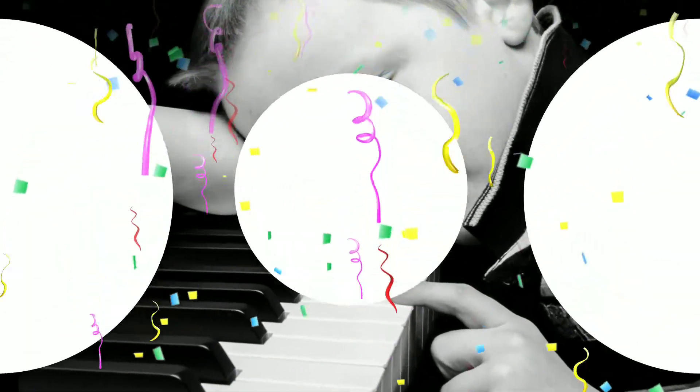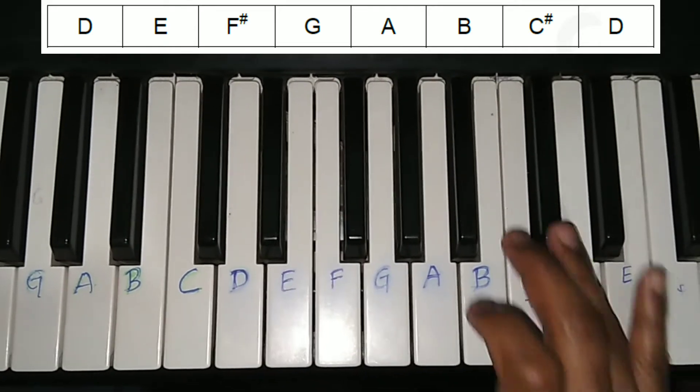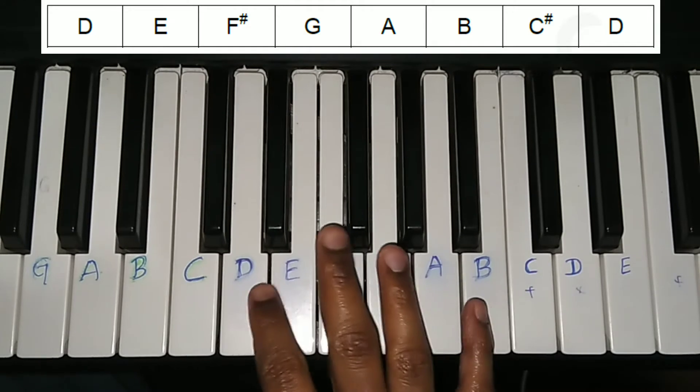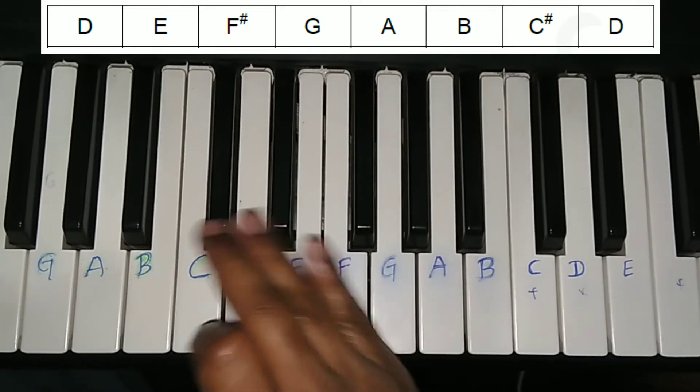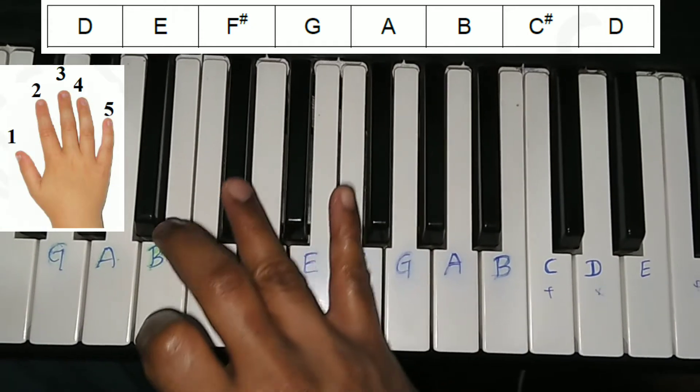Today we are going to learn the song 'In His Time'. Your D scale is D, E, F sharp, G, A, B, C sharp, D. For this song, your notes will come at C sharp, so when it is at C sharp, place your fourth finger on C sharp.